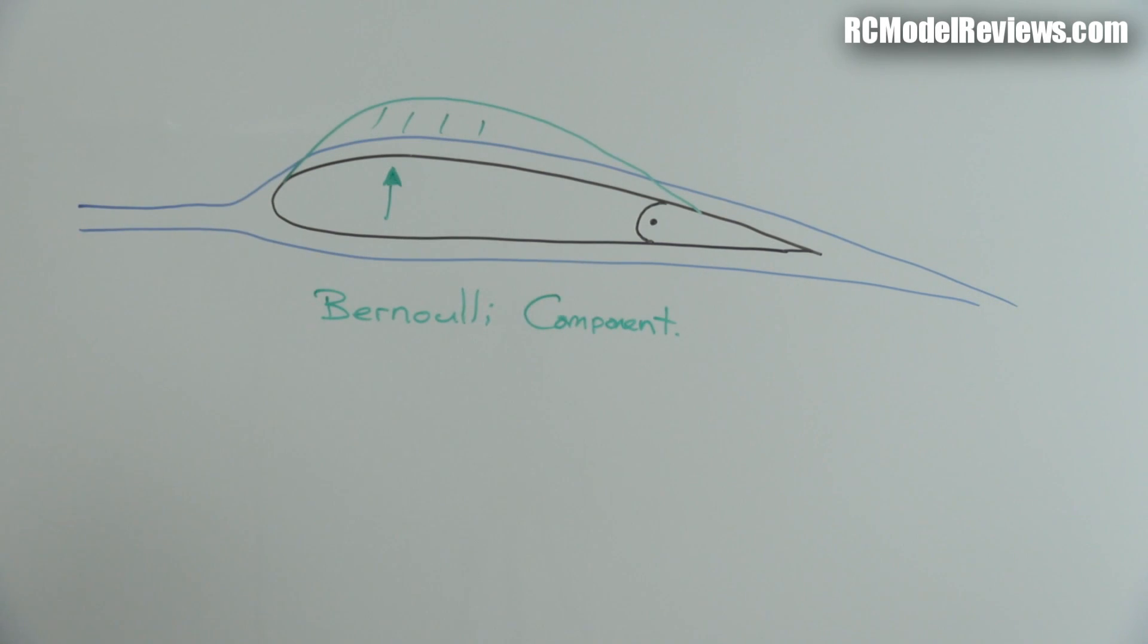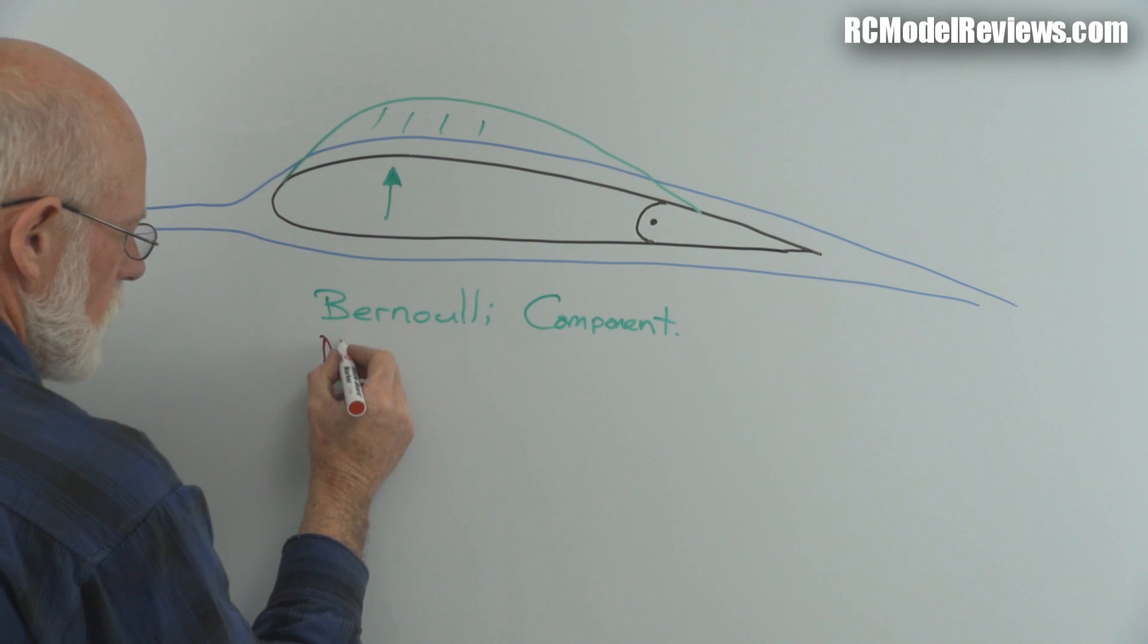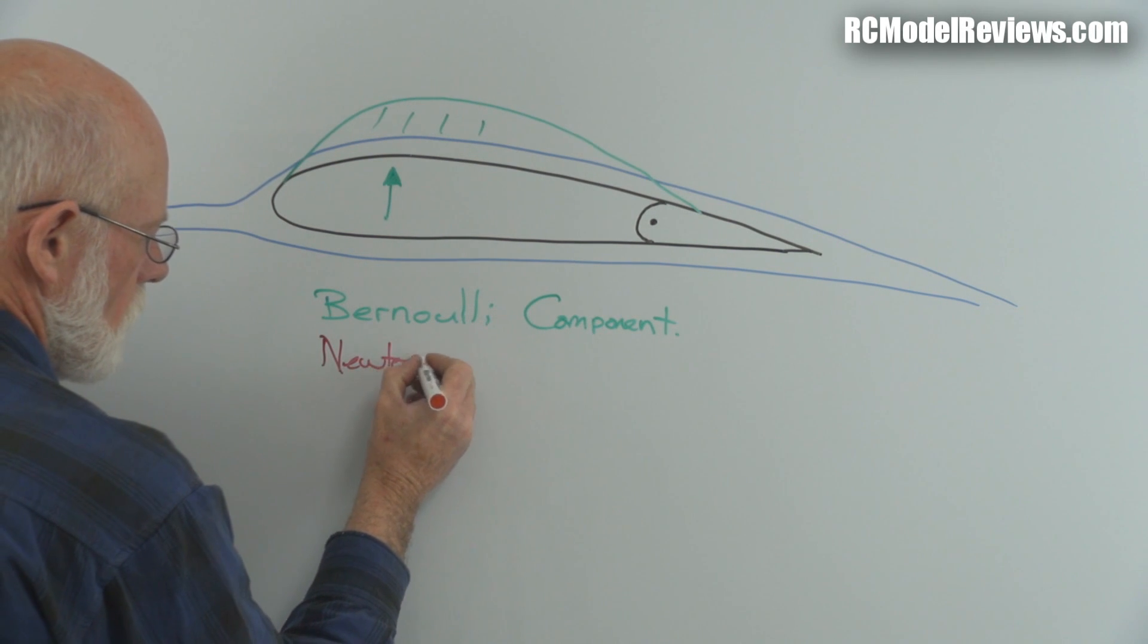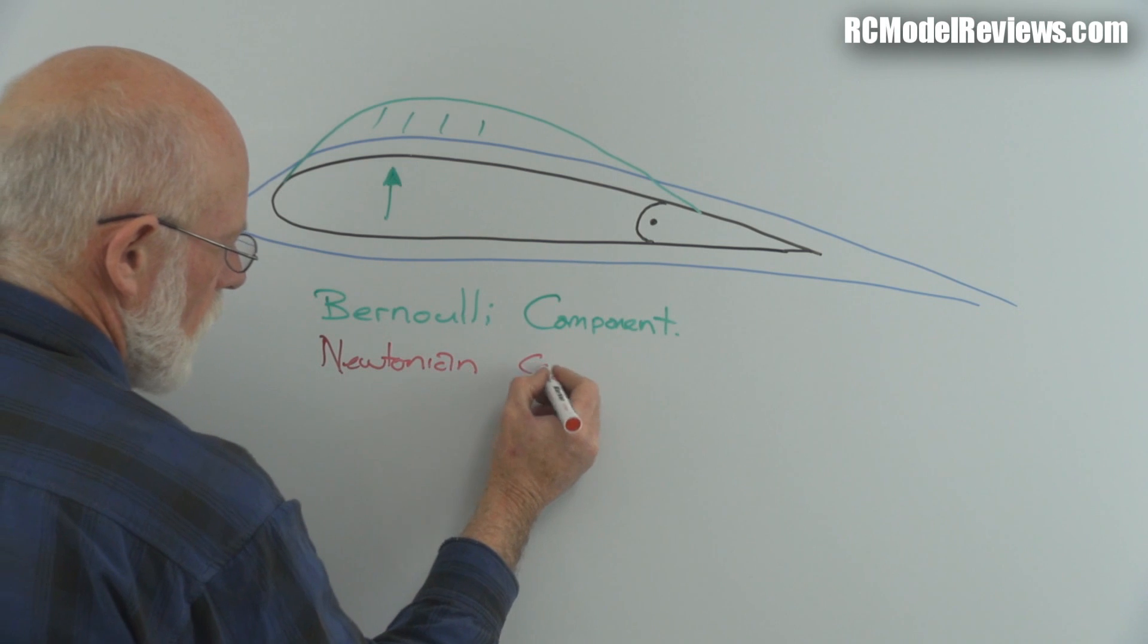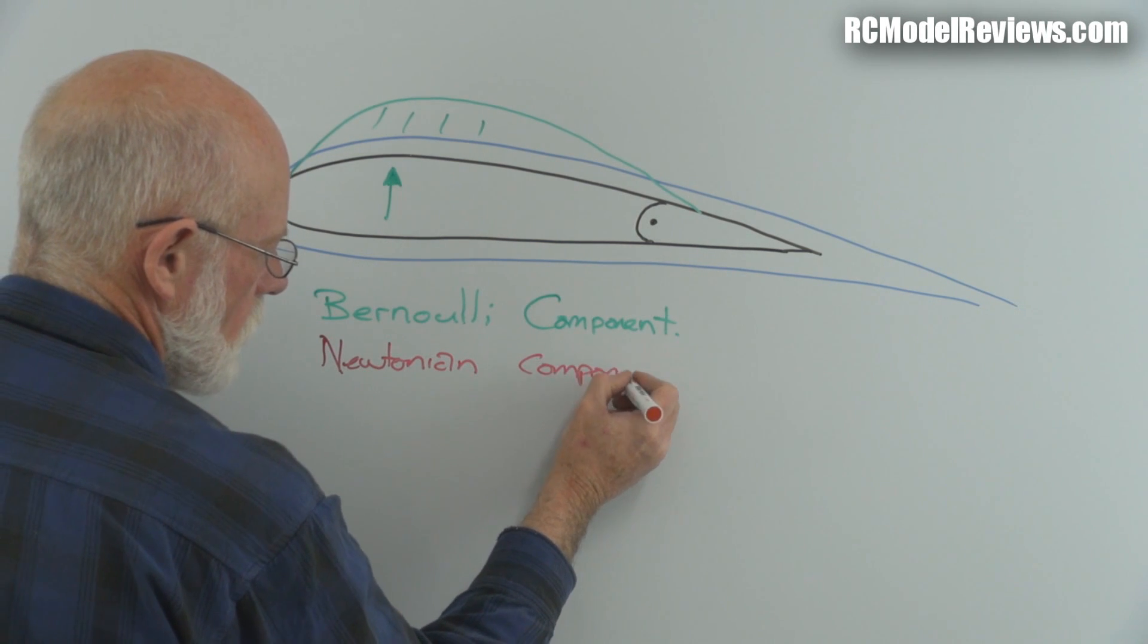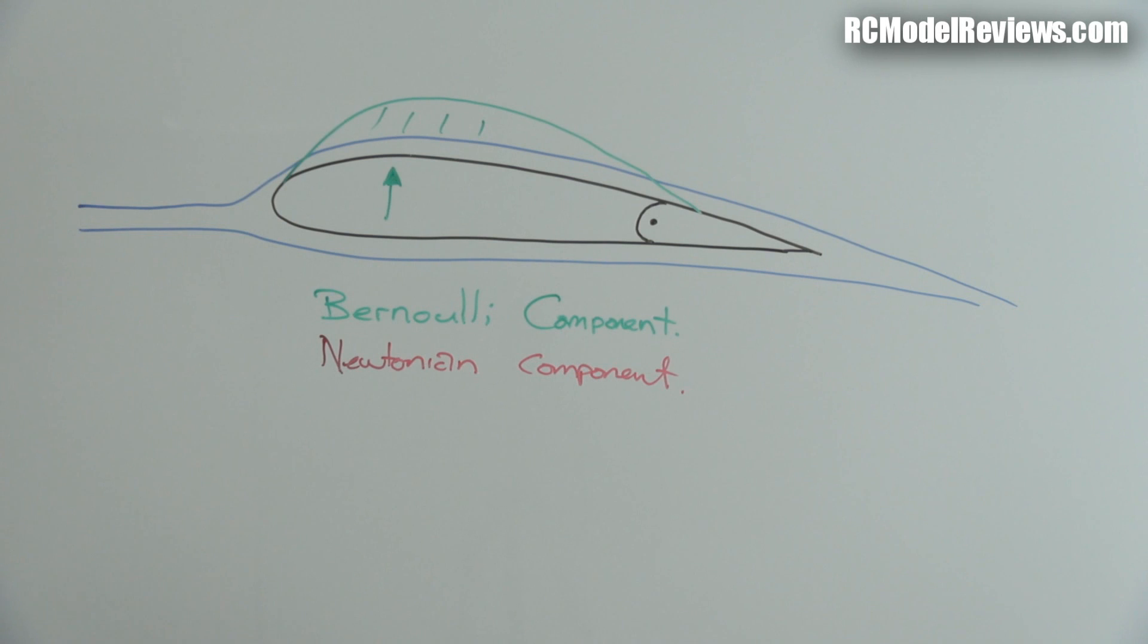And so if we assume that the air at the back and the air on the top and the bottom reach the back at the same time, then this must travel faster. Therefore, the pressure on top is lower, and that means that we end up with what is quite often drawn like this, which is a lift bubble. That area there is actually an area of lower pressure.